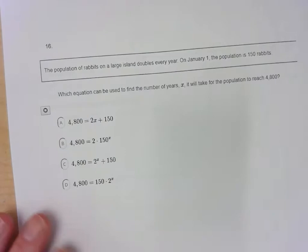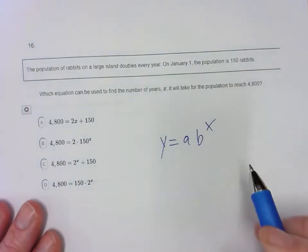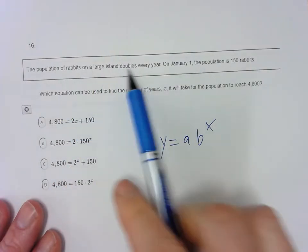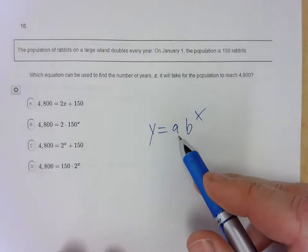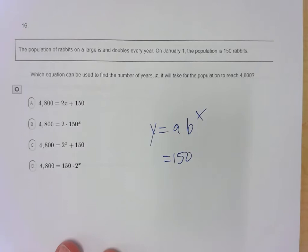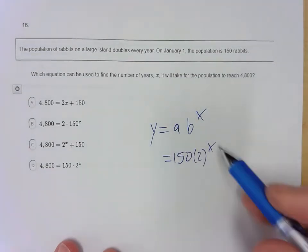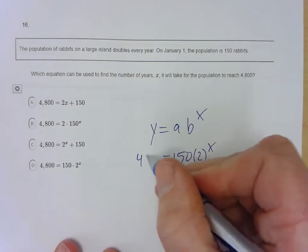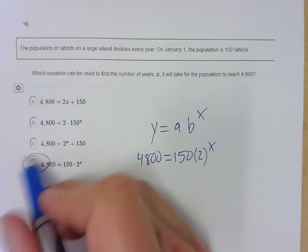Question 16: This is an exponential growth problem using y equals a times b to the x. The starting amount a is 150 rabbits, and the rabbits double, so b is 2. We want to know when it reaches 4,800 — that's the stopping amount. So the equation is y equals 150 times 2 to the x, and we want when it reaches 4,800. That's choice D.